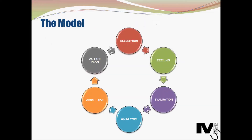Now let's look at the actual model. As we can see, the model consists of six steps. The model can be separated into two sections: the first section consisting of description, feeling, and evaluation, and the next section consisting of analysis, conclusion, and action plan. Dividing the tool into two sections will help you remember the individual parts, and the stages will get clearer through the course of this tutorial.